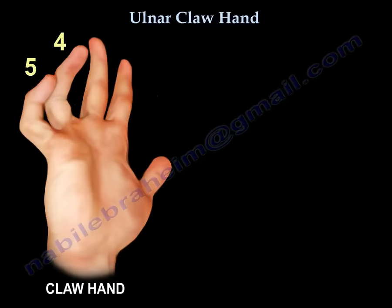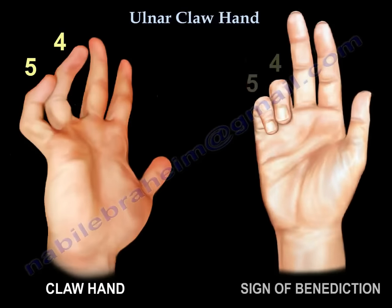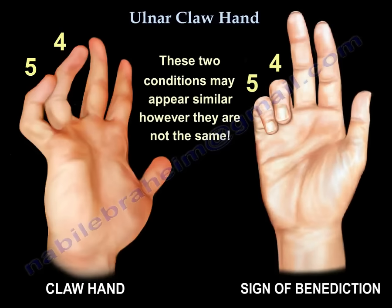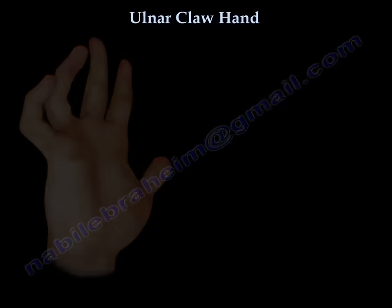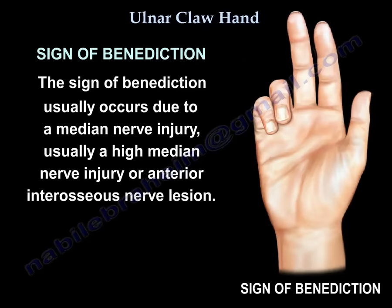Claw hand and the sign of benediction may appear similar; however, they are not the same. The claw hand comes from an ulnar nerve injury, usually a distal lesion, while the sign of benediction usually comes from a median nerve injury — typically a high median nerve lesion — or from an anterior interosseous nerve lesion.